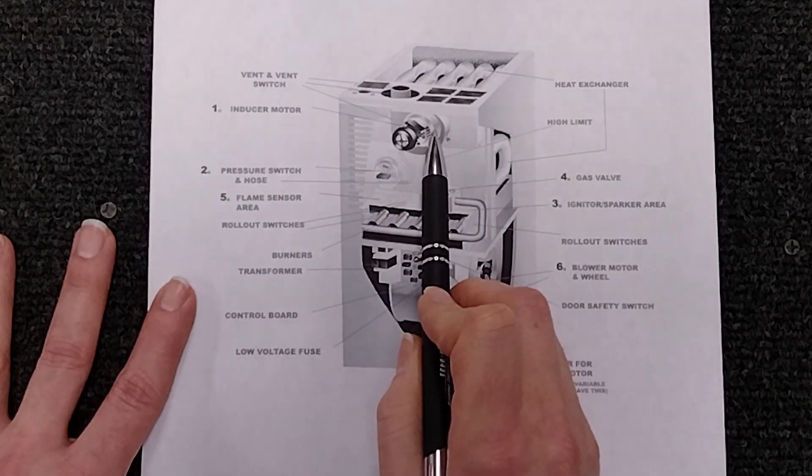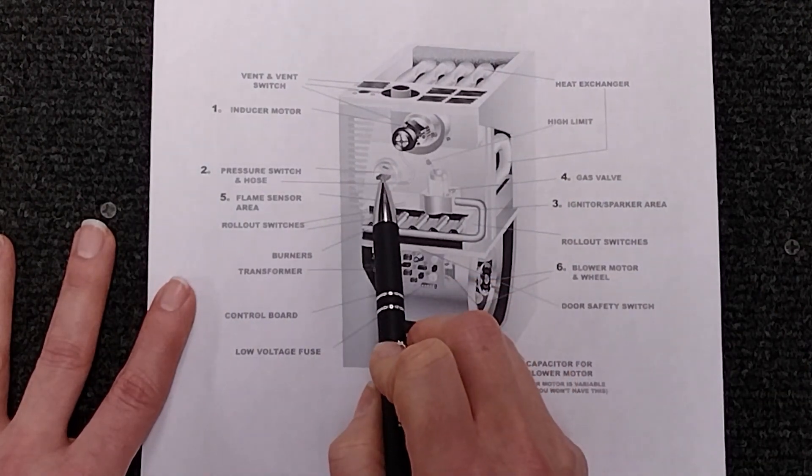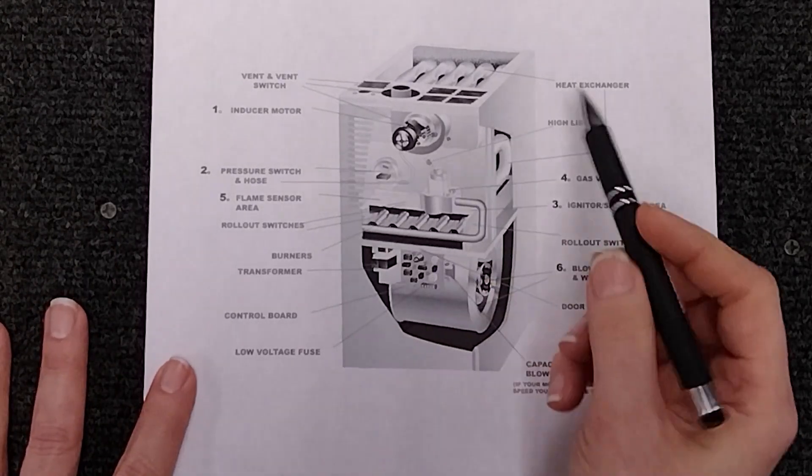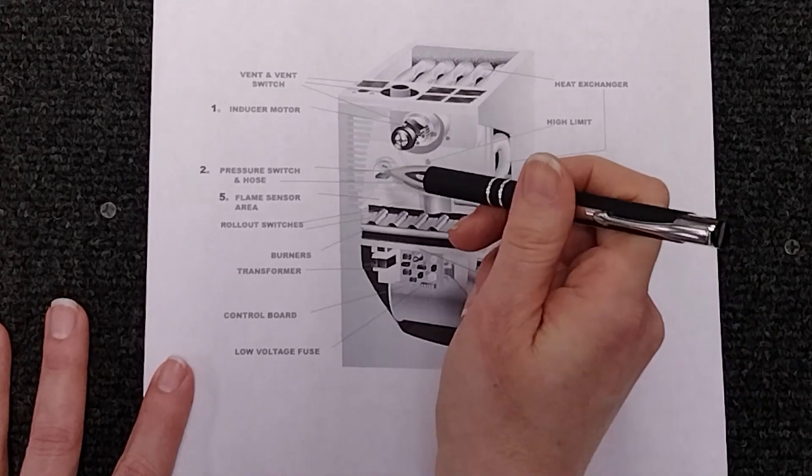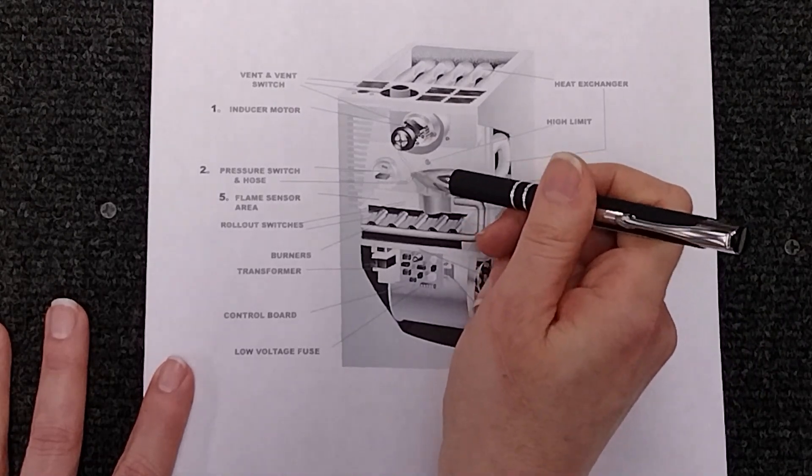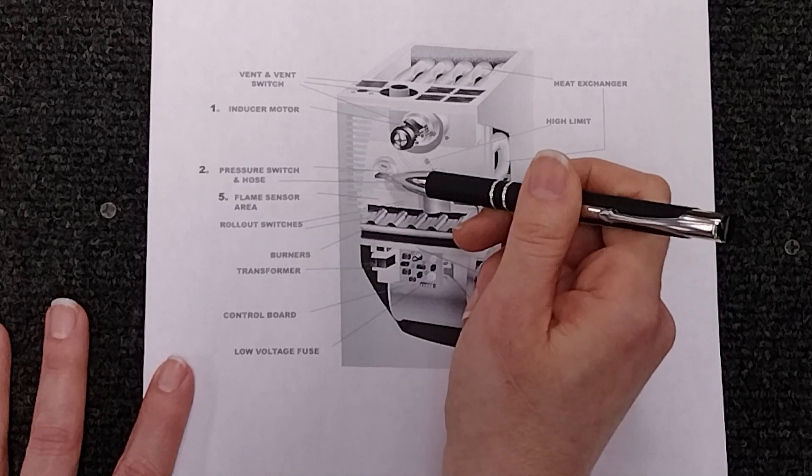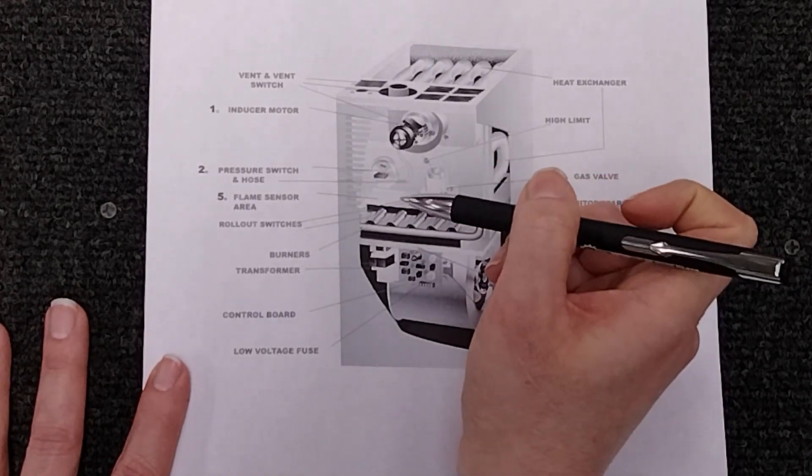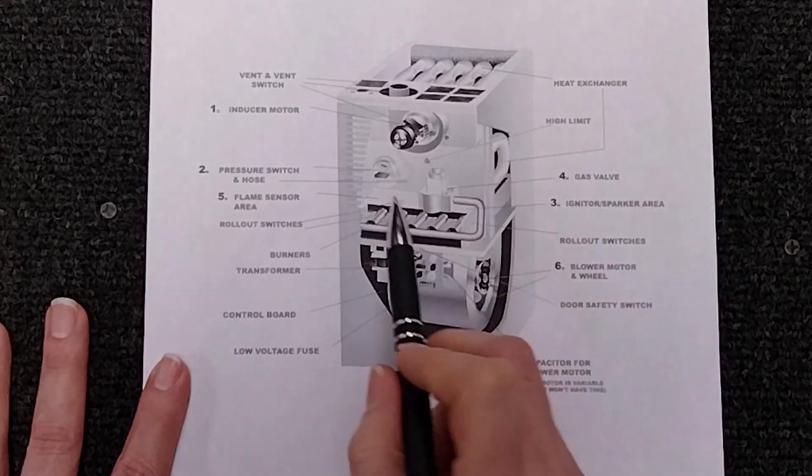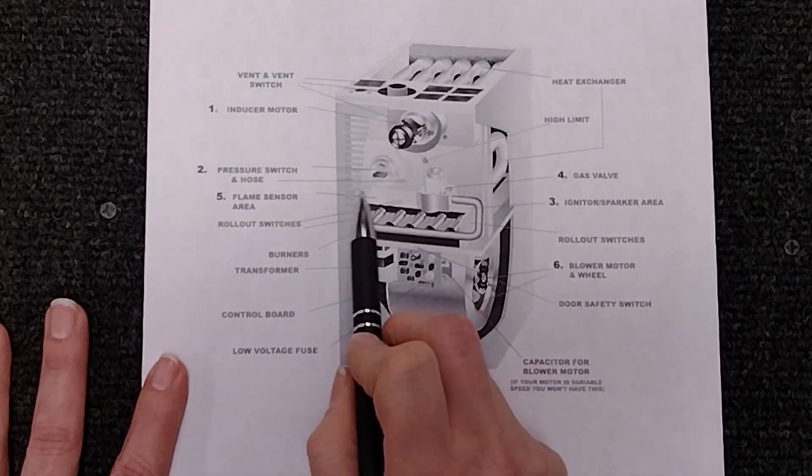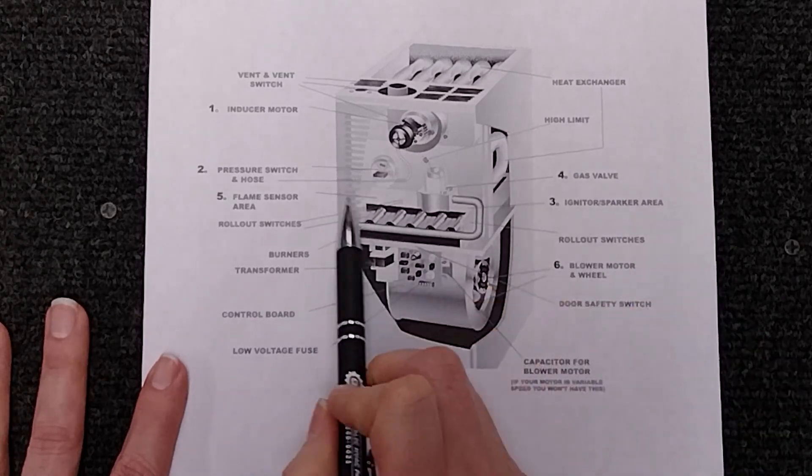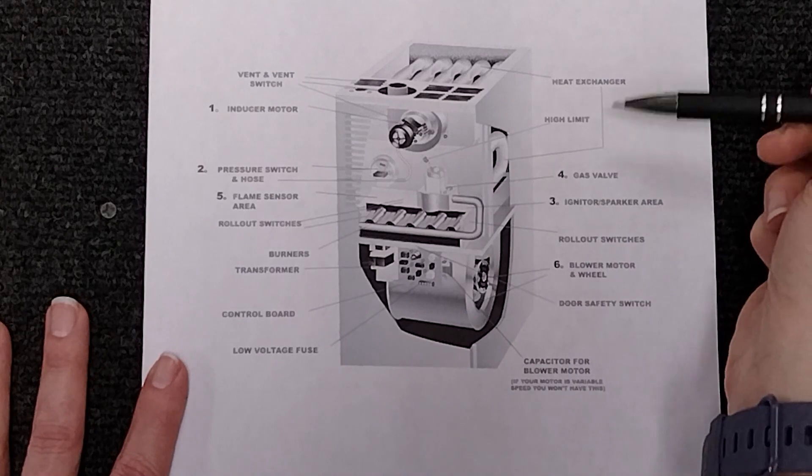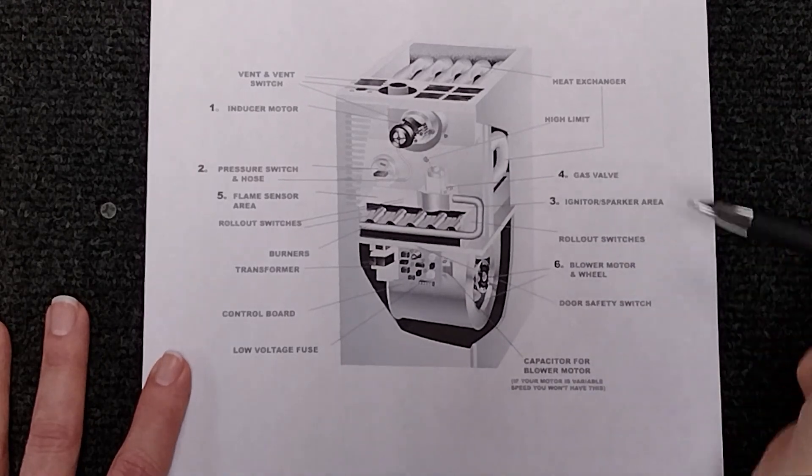Once that comes on your pressure switch in most cases are going to be under negative pressure. So when this comes on it's going to pull that negative pressure through this tube and it's going to close the line that's going through the pressure switch. Once that pulls through obviously path of least resistance that low voltage is going to go through that line and it's going to go through a series of switches.